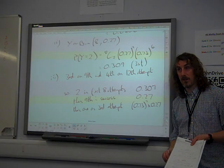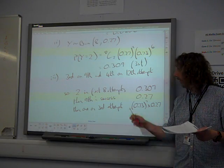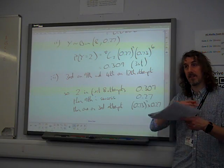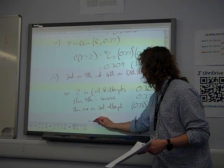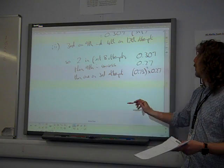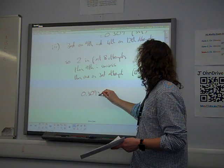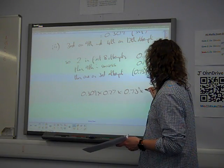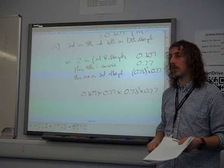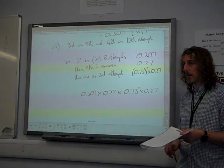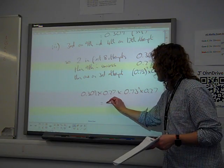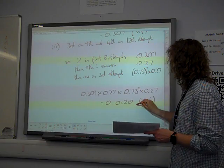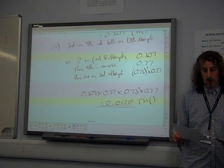And all of this has to happen. It's not this OR this OR this. It's all of this has to happen at exactly the same time, the same turn. It all has to happen together. So for that all to happen, we need 0.309 and 0.27 and 0.73 squared times 0.27. That's the calculation that we need because they all need to happen together. If we multiply that together, it gives 0.0120 to three significant figures. So there is our answer.